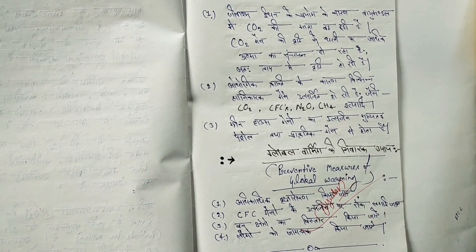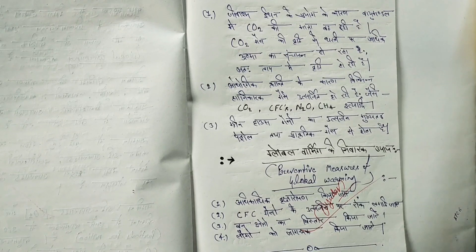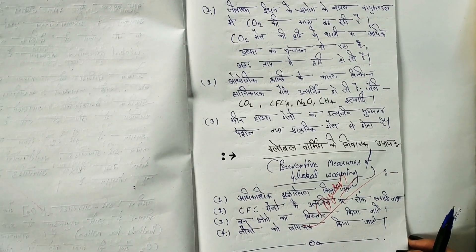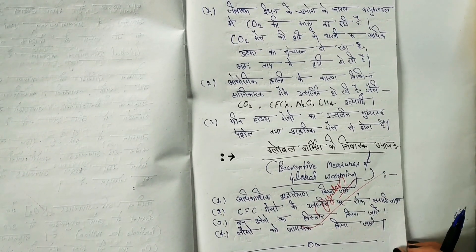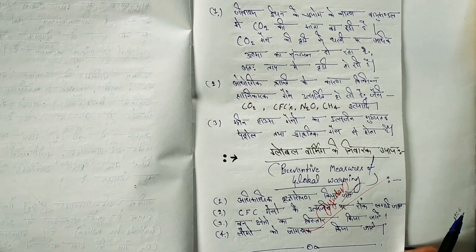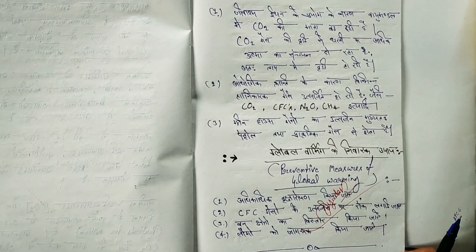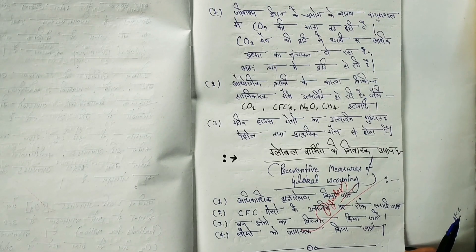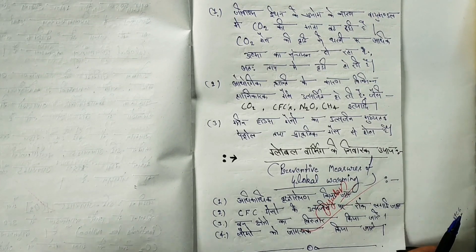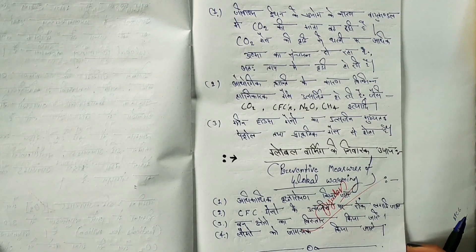Preventive measures for global warming — global warming ke nivarak upay: first, adhik se adhik vrikshaaropan kiya jana chahiye; second, CFC gases ke utsarjan par rok lagani chahiye; third, vriksh kshetron ka vistar kiya jaye; fourth, logon ko jaagrit kiya jaye.